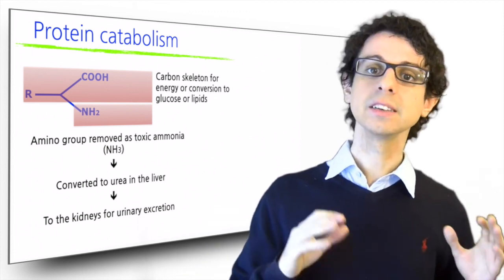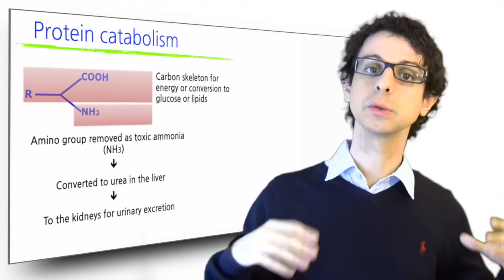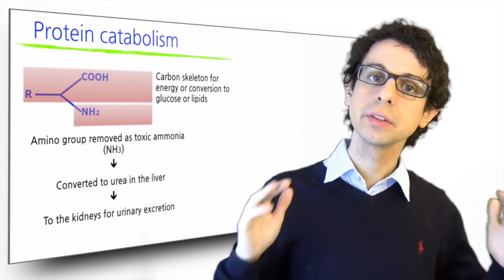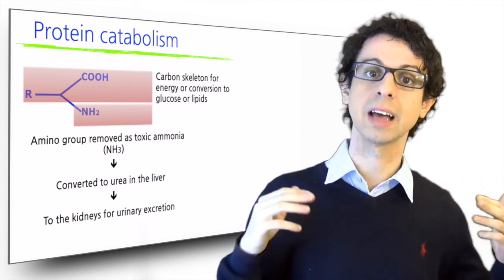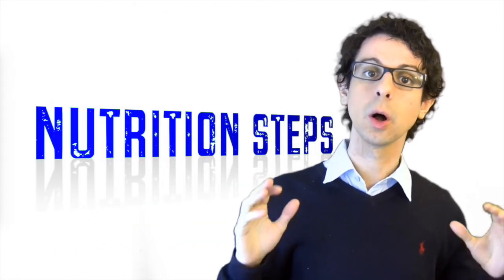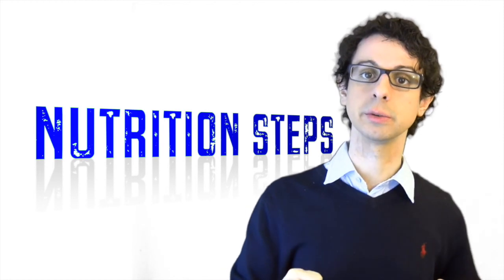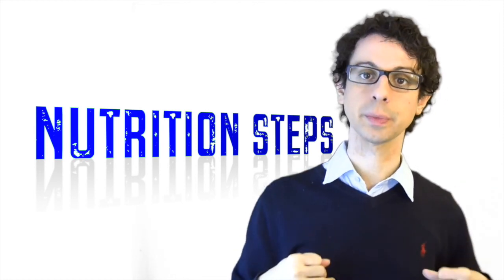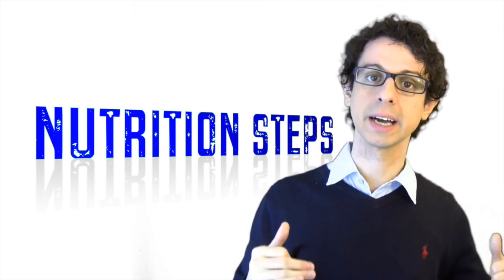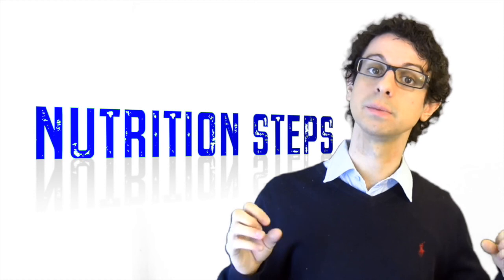And so you see, the liver and the kidneys have to do some work to catabolize protein and allow their use for energy. And for this reason, their thermogenesis is higher than the other nutrients. On top of that, protein catabolism will also increase water losses, because to flush out this urea, we have to use water. This is one of the reasons why high protein, low carb diets make you quickly lose some weight. But that weight is mostly water.